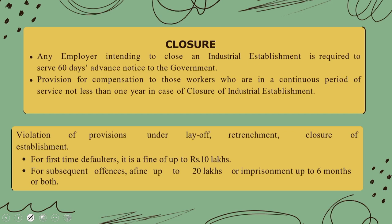Regarding closure, any employer intending to close an industrial establishment is required to serve 60 days' advance notice to the government, and there is provision for compensation to workers in continuous service of not less than one year. Violation of provisions under layoff, retrenchment, or closure results in a fine of up to rupees 10 lakhs for first-time defaulters, and for subsequent offenses, a fine of up to rupees 20 lakhs or imprisonment up to six months or both.